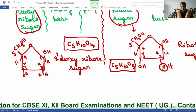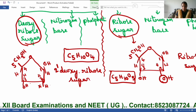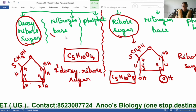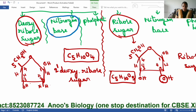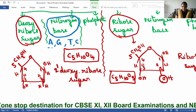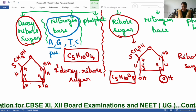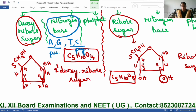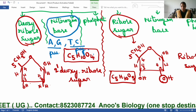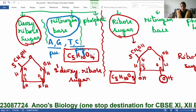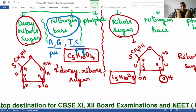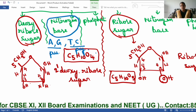Now let us see the second chemical difference between DNA and RNA. That difference is the nitrogen base. The type of nitrogen bases present in DNA are adenine, guanine, thymine, and cytosine. Adenine and guanine are purines; thymine and cytosine are pyrimidines. I have explained the purine and pyrimidine structures in the previous video with tricks to remember them — do watch that video.